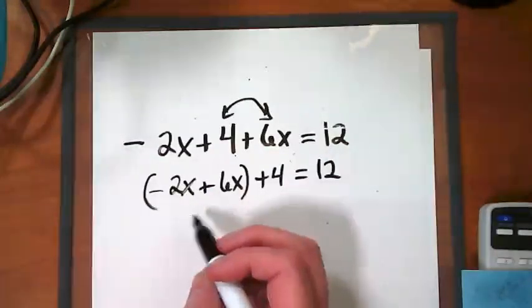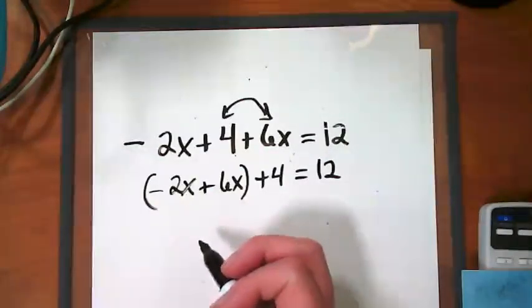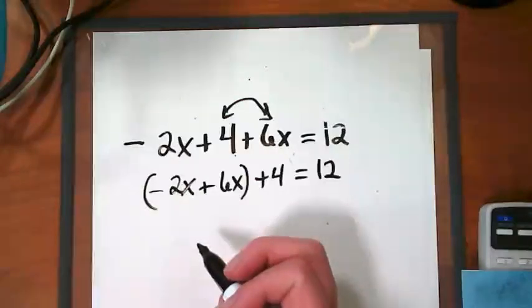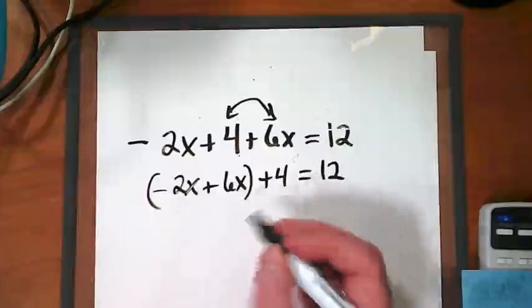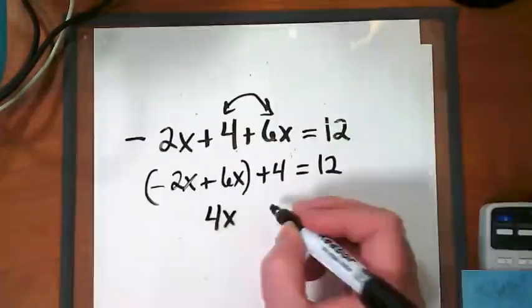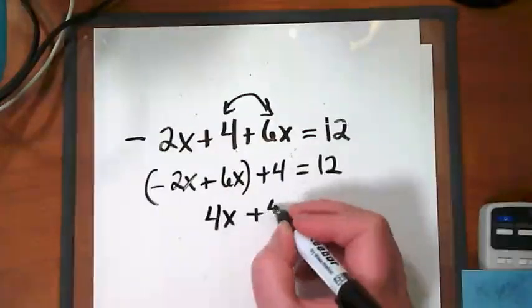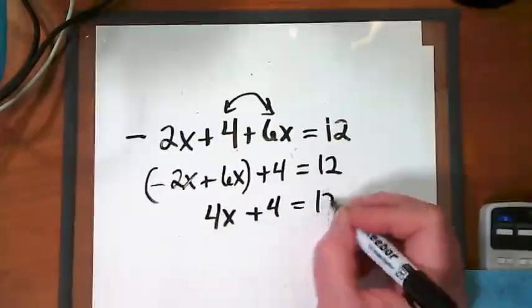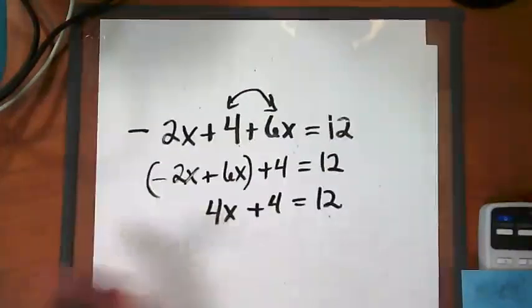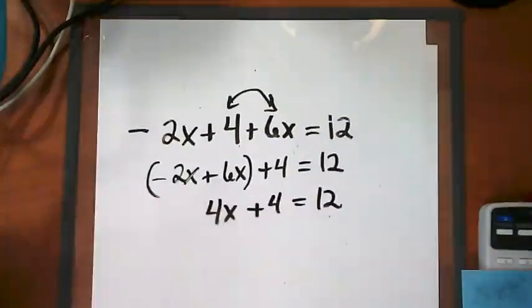What is negative 2 and positive 6? Everybody. 4. This negative 2 and positive 6 are with an x, so this becomes 4x plus 4. We haven't touched this 4, so we're just bringing it down. Equals 12. Same with the equal sign and the 12. Elaine? Oh, okay, got it.